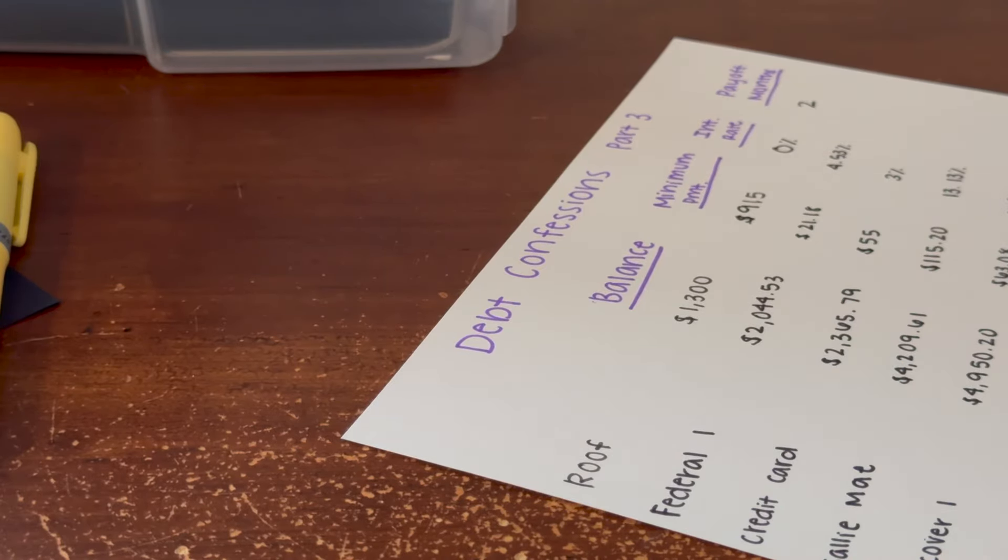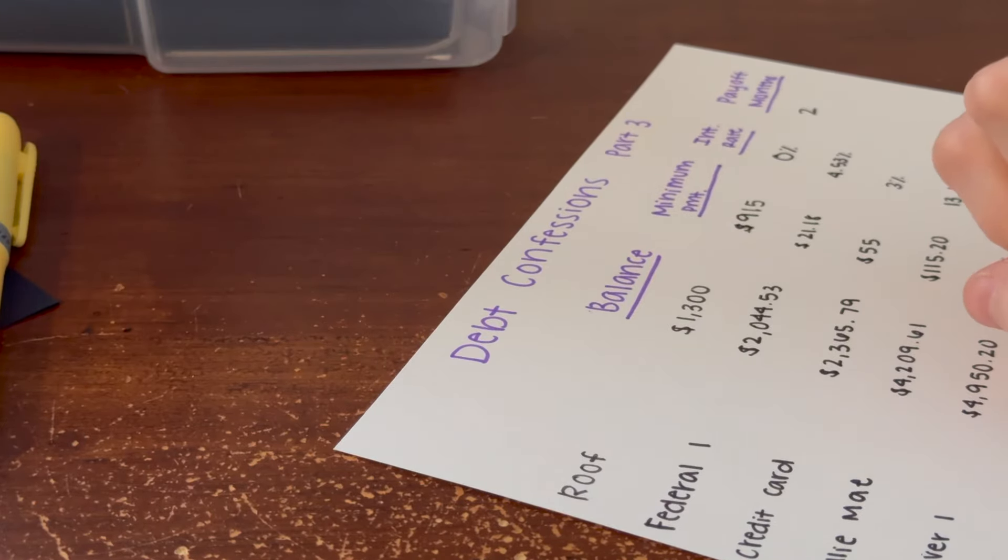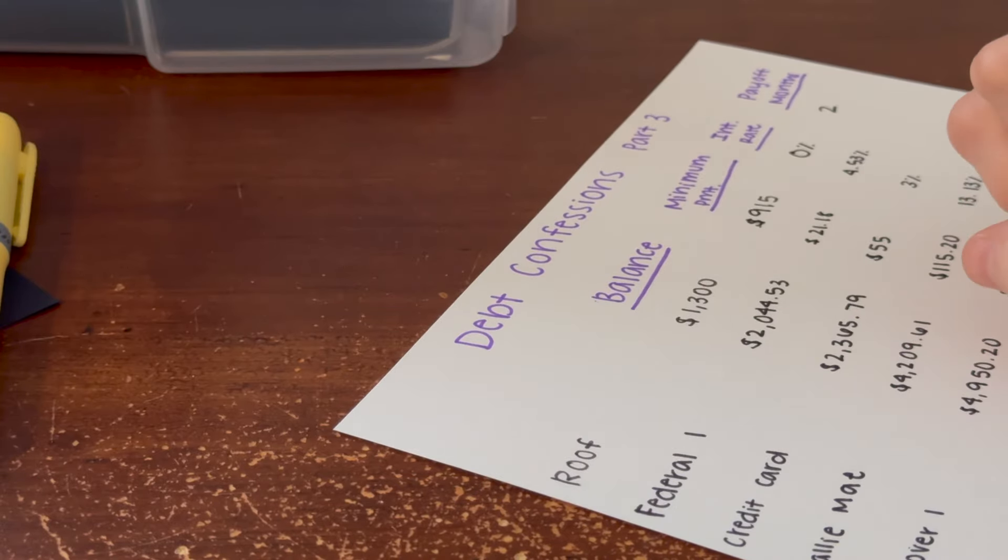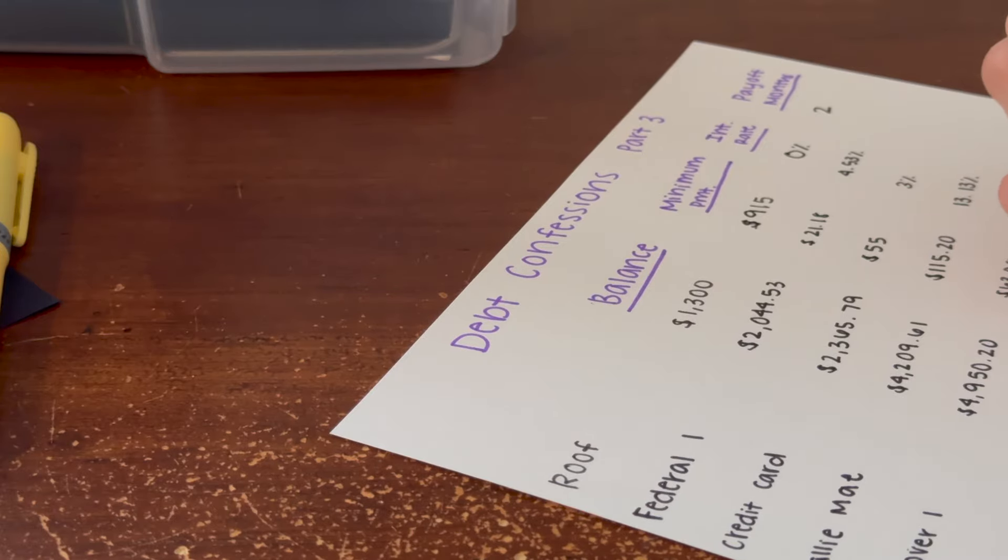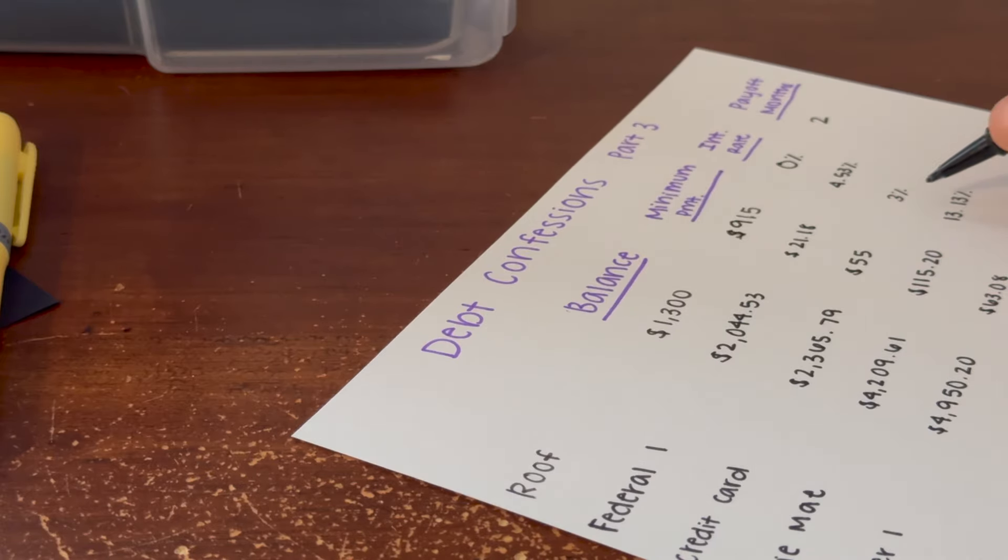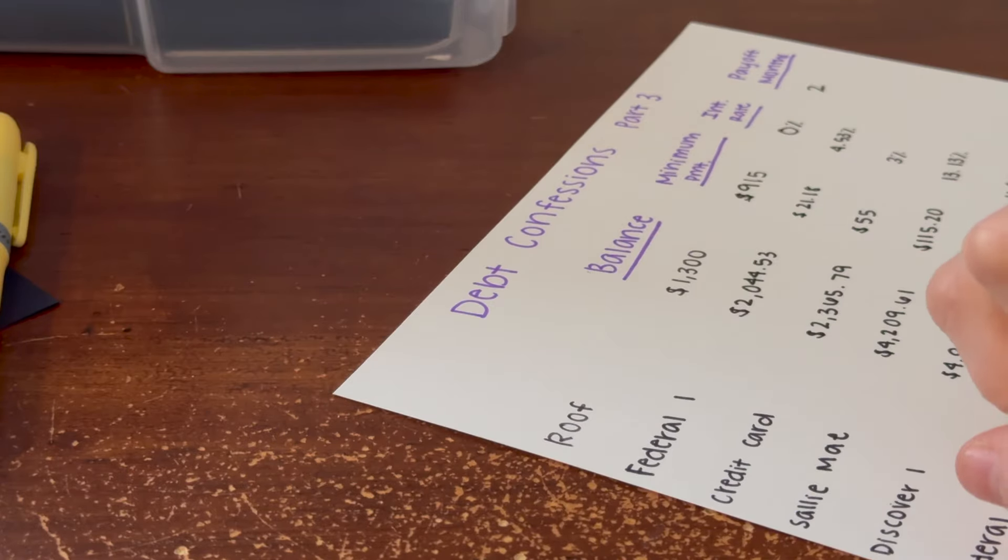Then we have my second federal and this one has a balance of $5,530.05. The portion of my payment that goes to this is $57.27 and this one has the same interest rate as the first one: 4.53%.